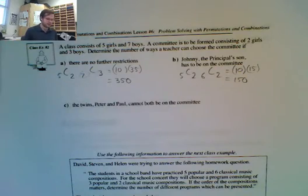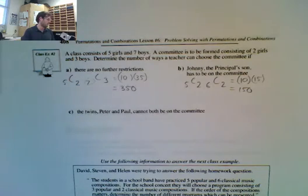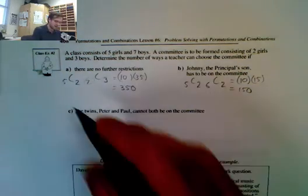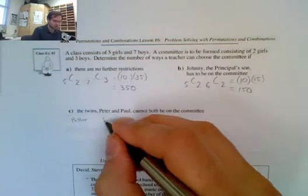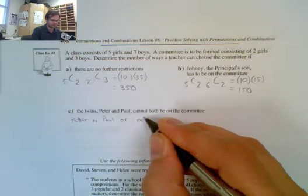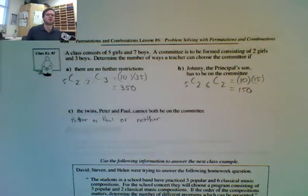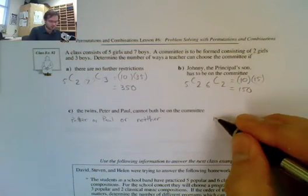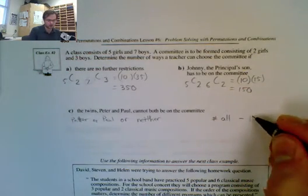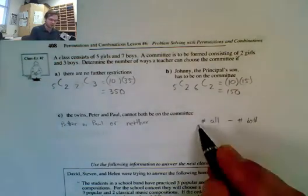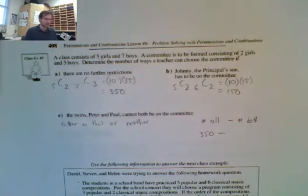Now let's take a look at C. The twins, Peter and Paul, cannot both be on the committee. So Peter and Paul cannot both be on the committee. We have three situations: we could have Peter, we can have Paul, or we could have neither. So we could do this two ways. We could calculate the probability that Paul is chosen, that Peter is chosen, and that neither are chosen. Or we could do the number of all subtract if both are chosen. I look at this, we already have all possibilities there, so I'm going to use this one. We're going to go 350 subtract.